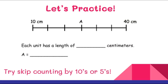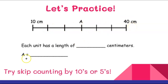This is what your work is going to look like today. You'll have two types of problems and we'll practice two of each. The first type has a number line with hash marks, some values given and some unknown. You have to figure out the length between each hash mark. The problem reads: each unit has a length of blank centimeters, and A equals blank. Once we figure out the value of each unit, we can figure out what A is. Our tip: try skip counting by tens or fives.